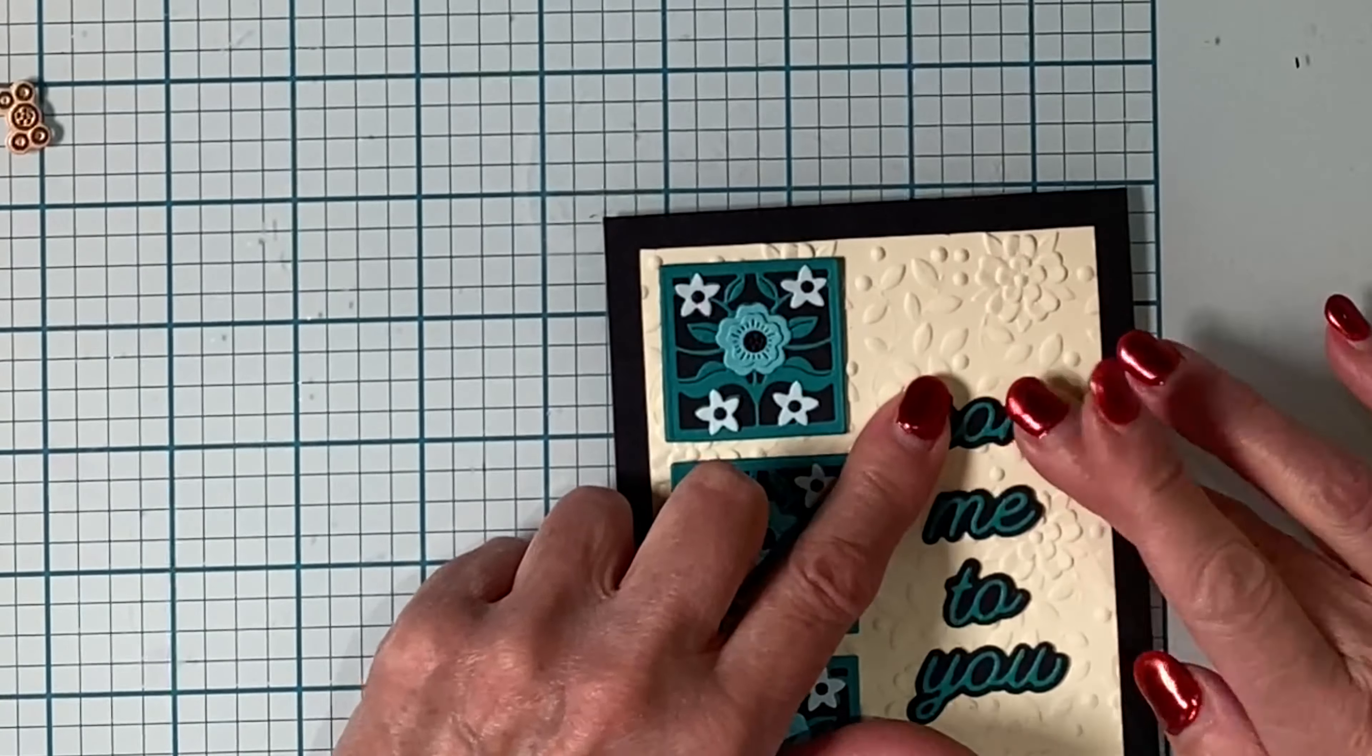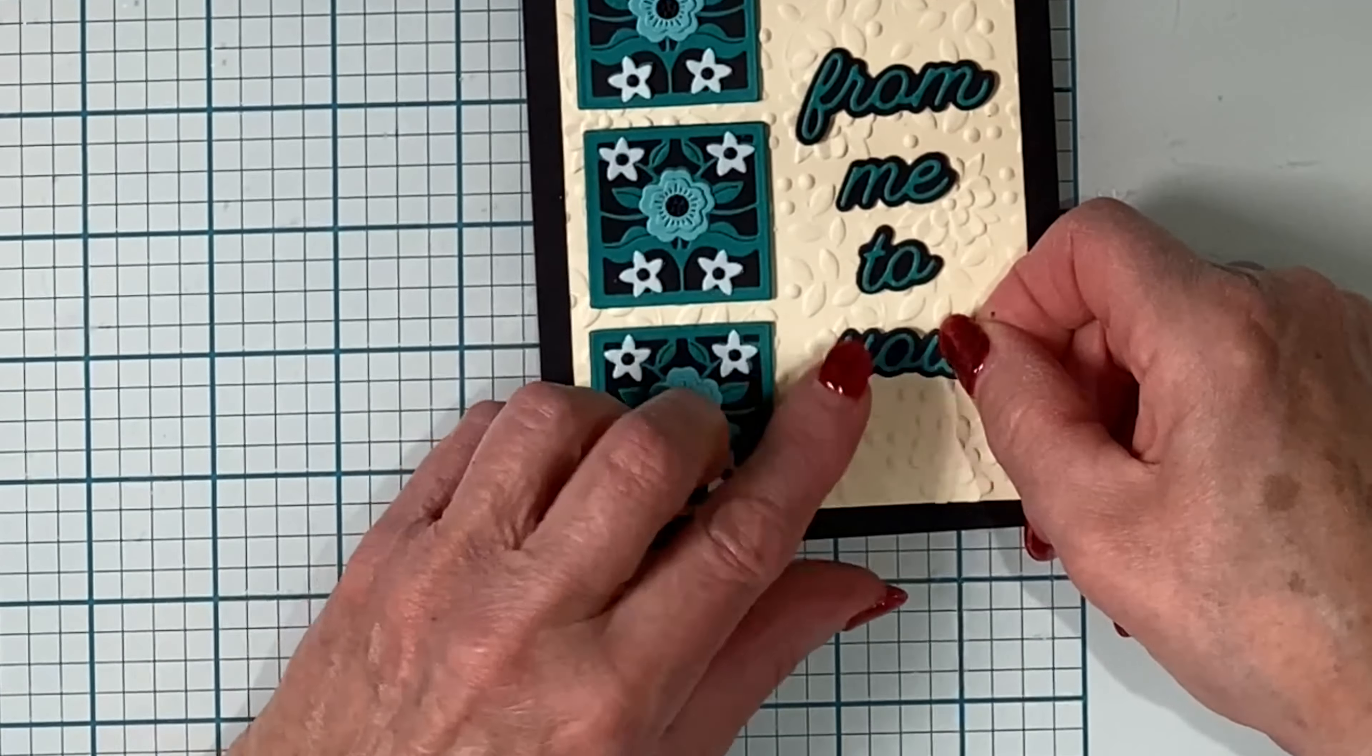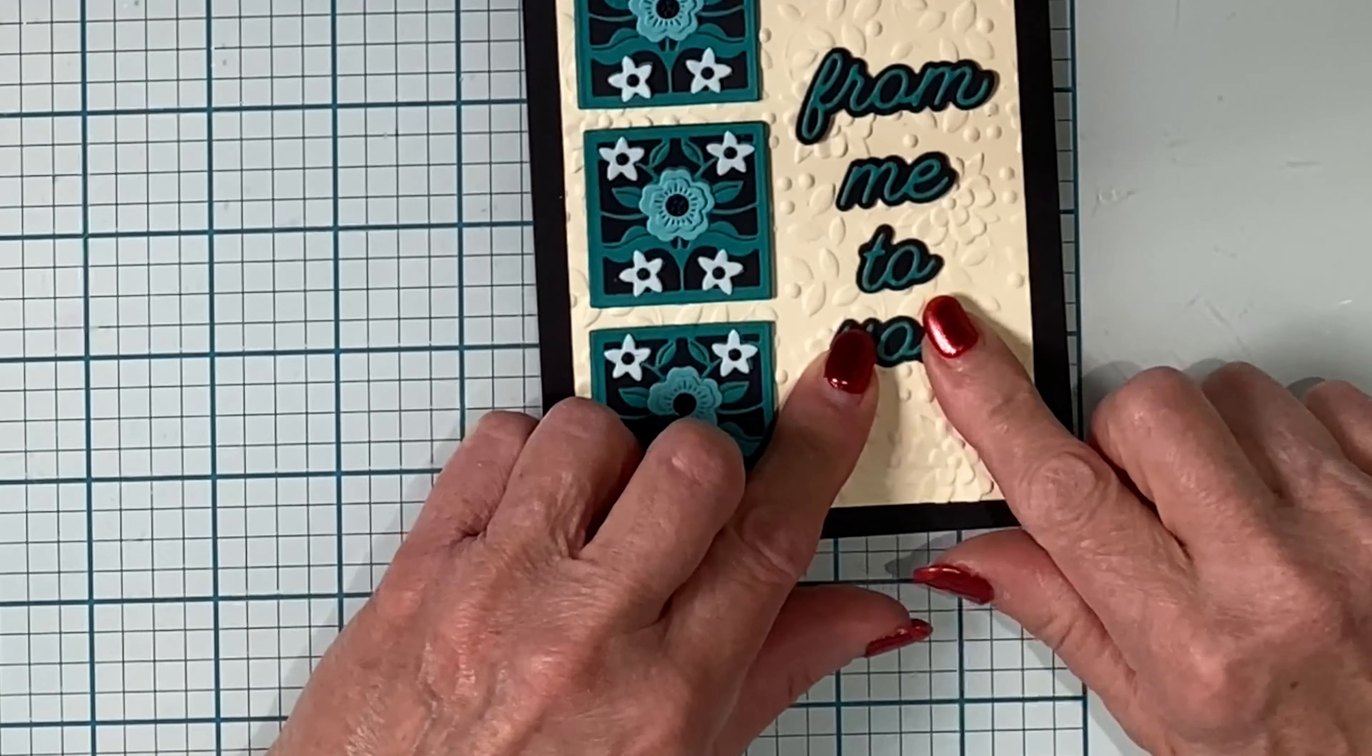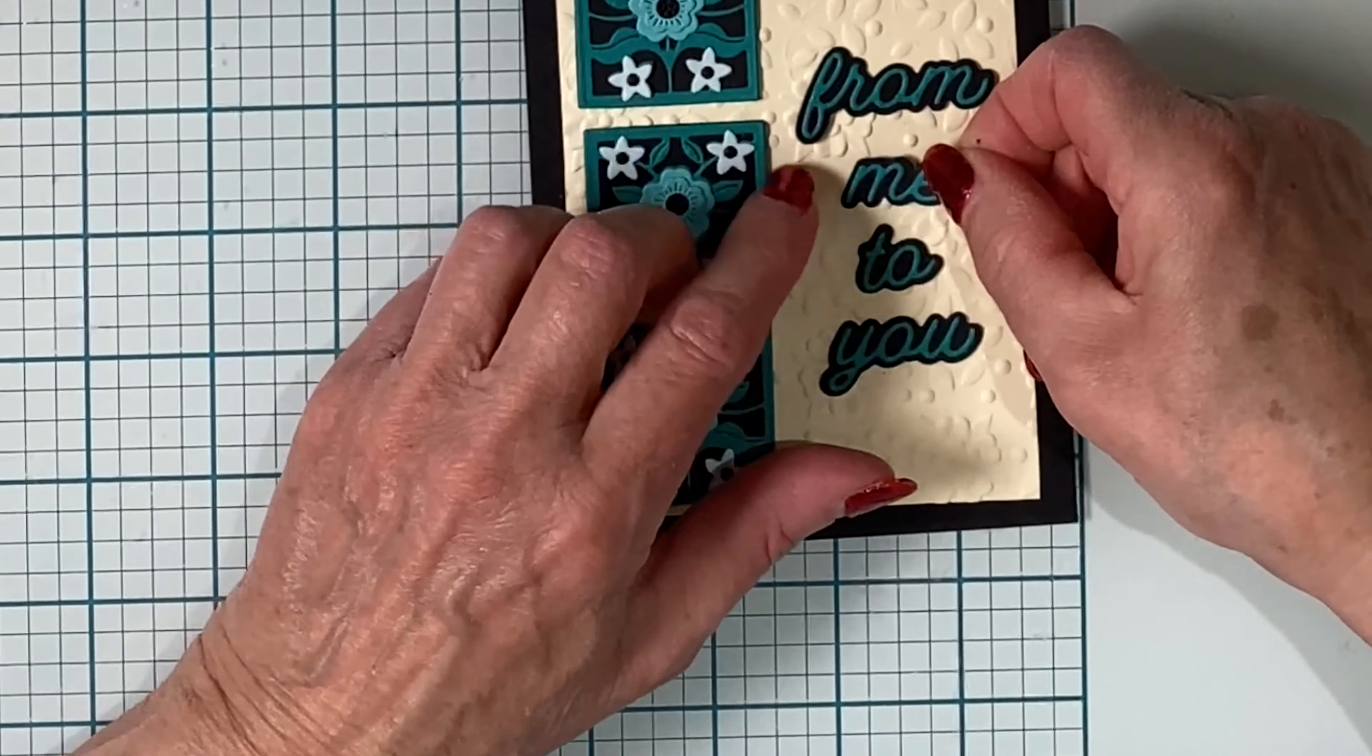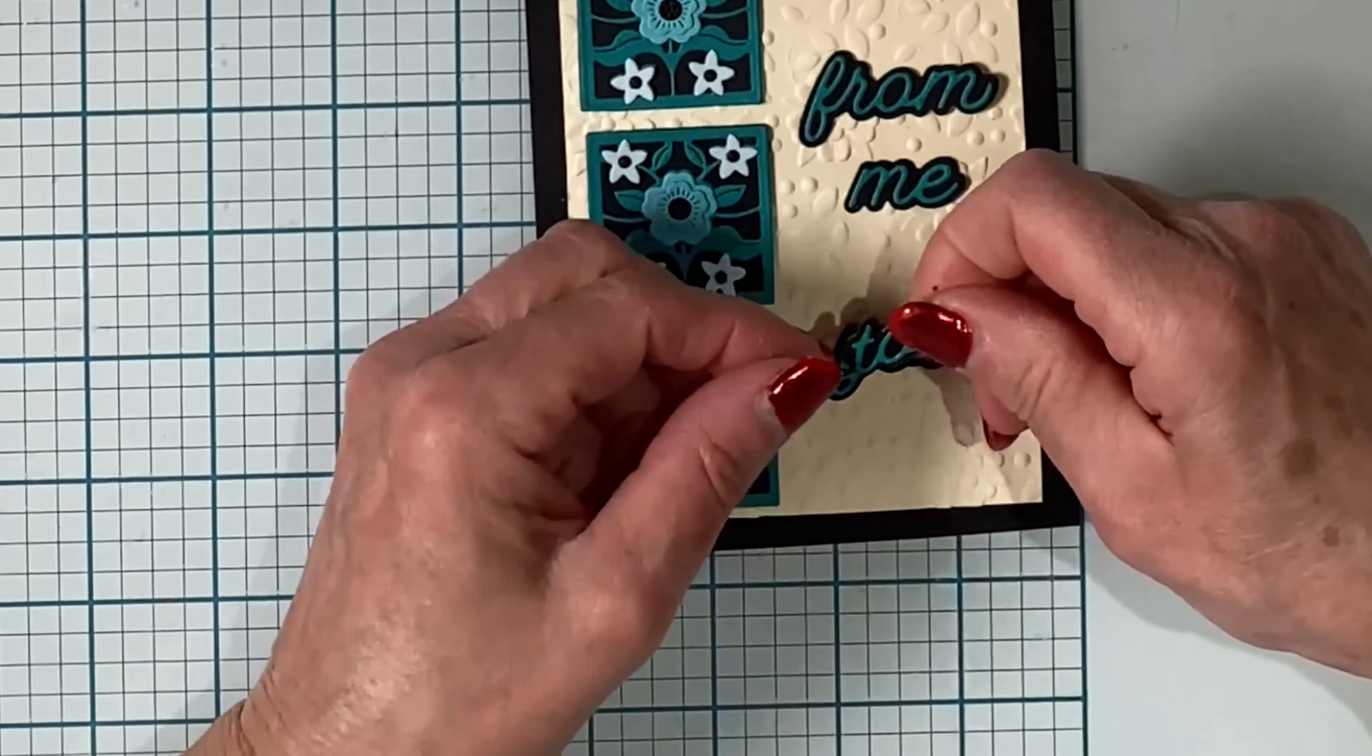To get these words lined up on the right hand side of the panel, I follow the same process that I did for the tiles, adhering the top and bottom word first and then working towards the middle.